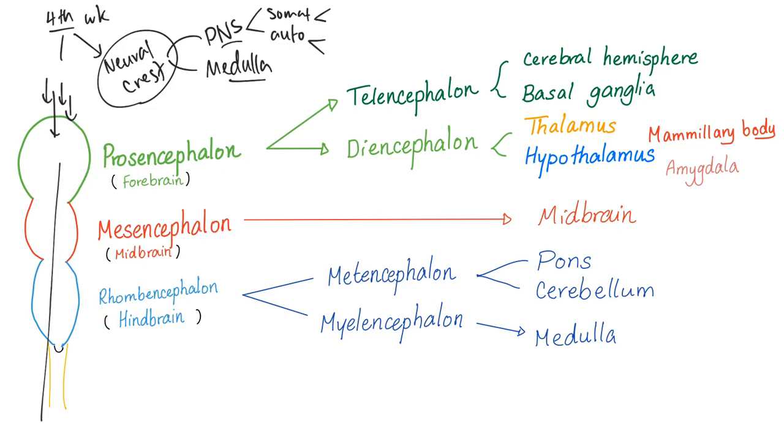Prosencephalon, mesencephalon, and rhombencephalon, or as they say in French, the prosencephalon. These three parts will give us the brain, and then this is going to be the spinal cord.